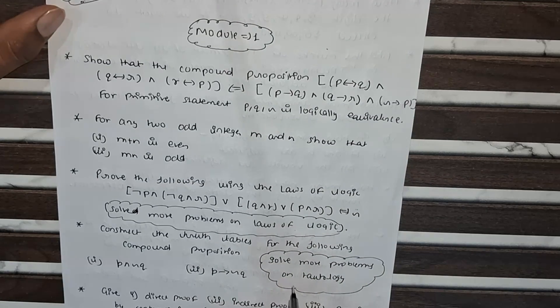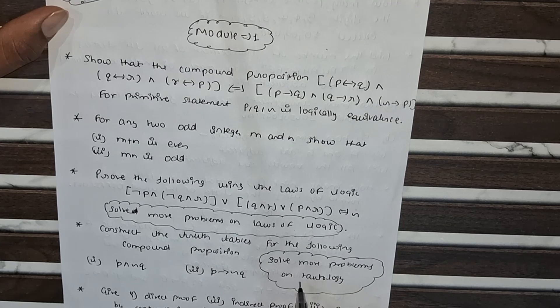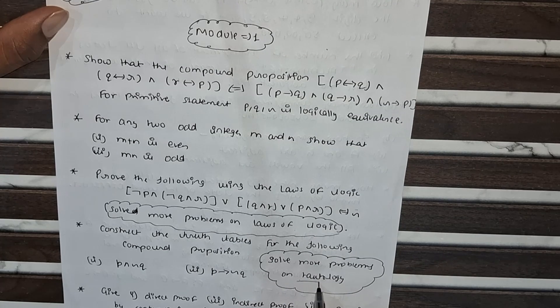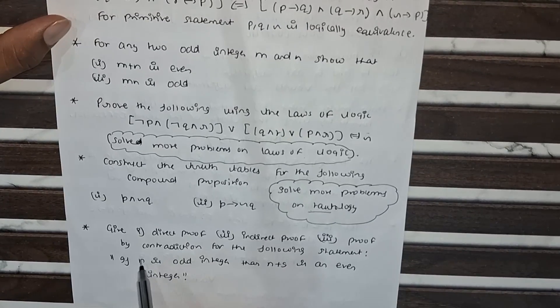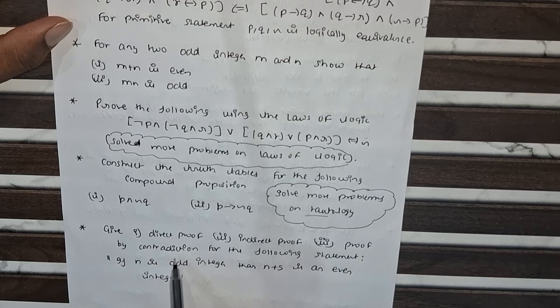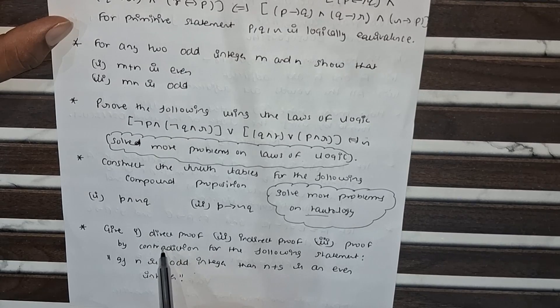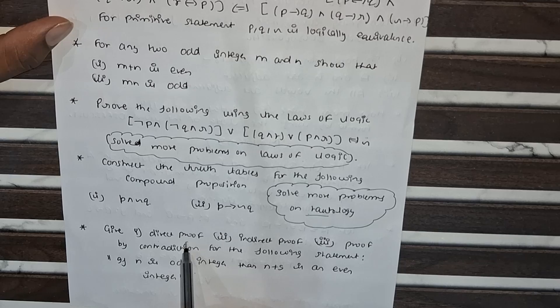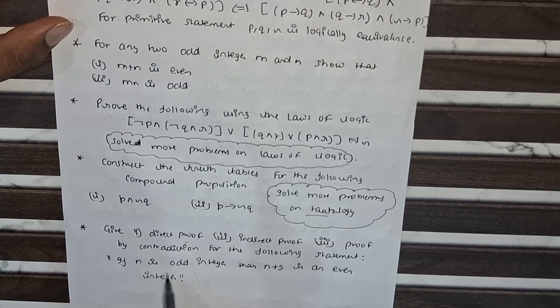For truth tables and compound propositions, solve more problems on propositional logic. The last one is direct proof, indirect proof, and proof by contradiction. This is a very important question because it asks three topics in one. One more important part is that M and N are odd integers.